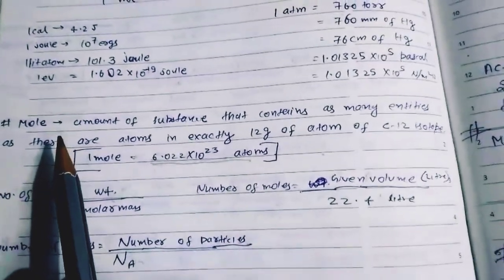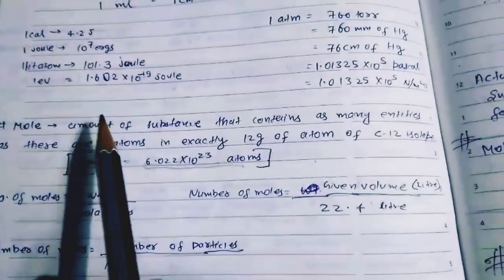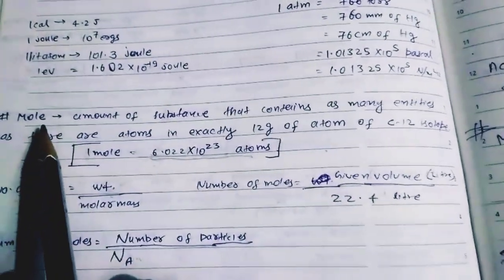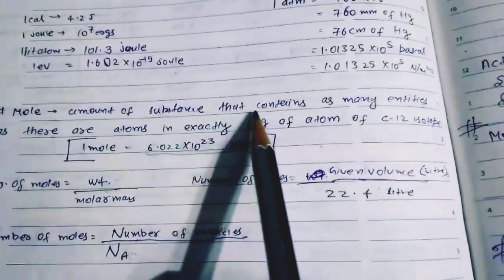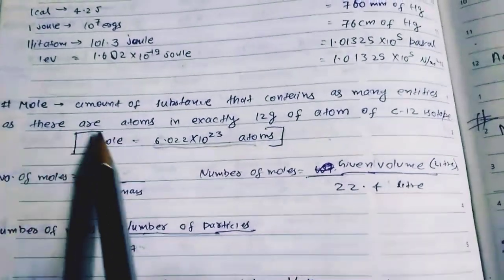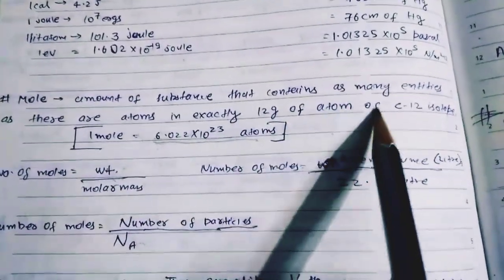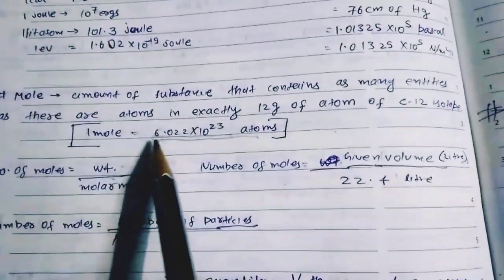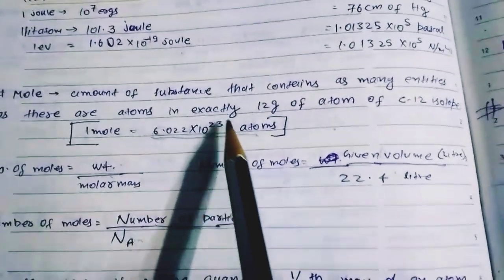Now we are starting the mole concept. These bullet points are very important for calculation. The mole is the amount of substance that contains as many entities as there are atoms in exactly 12 gram of C-12 isotope. One mole is equal to 6.022 into 10 to the power 23 atoms.